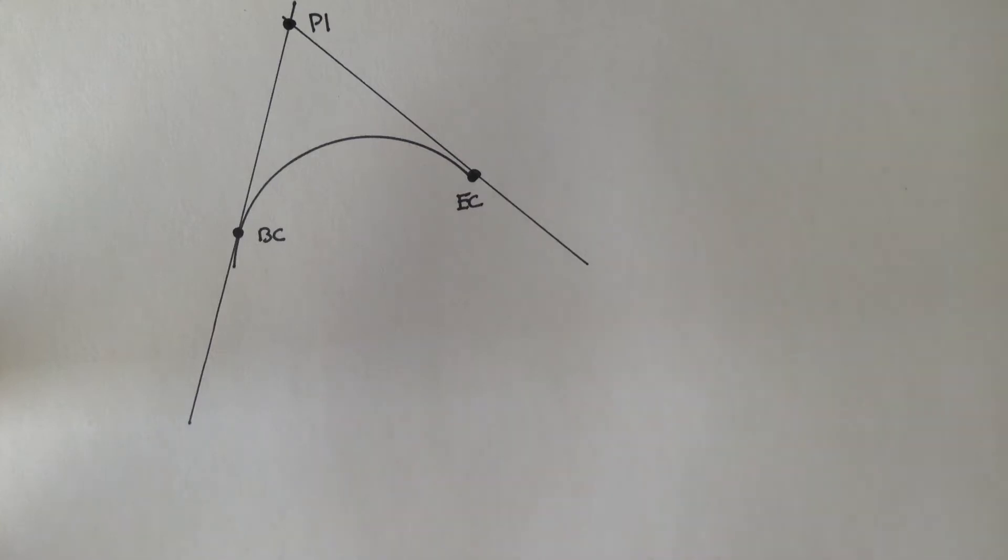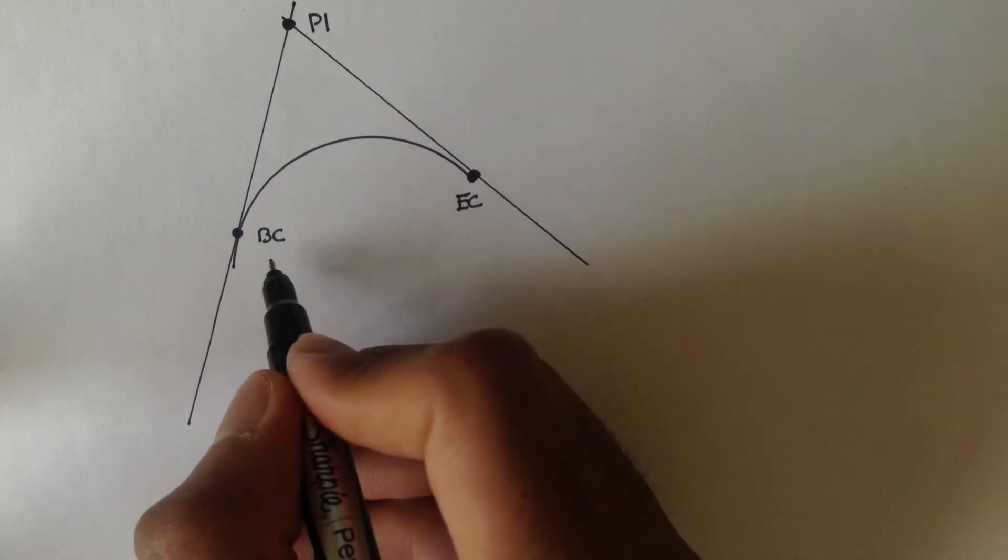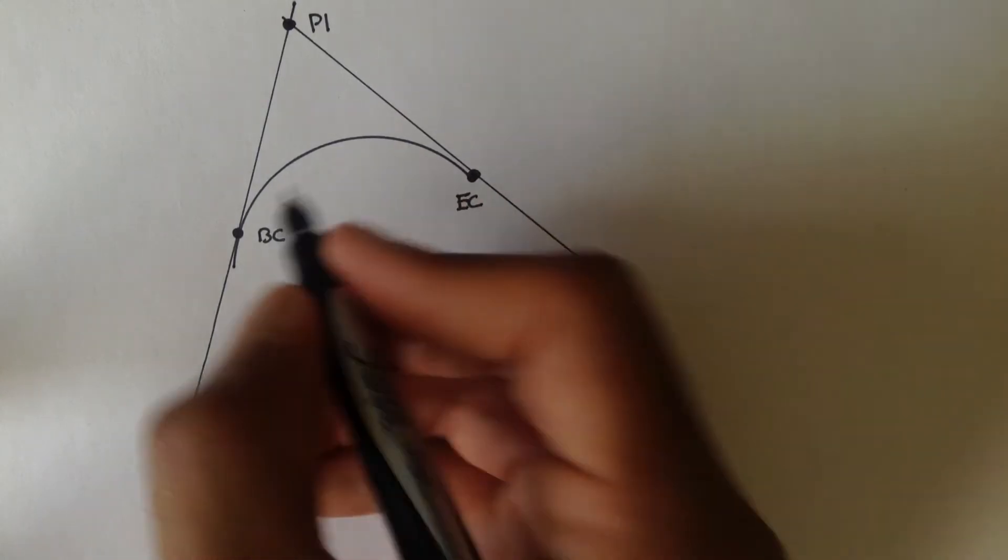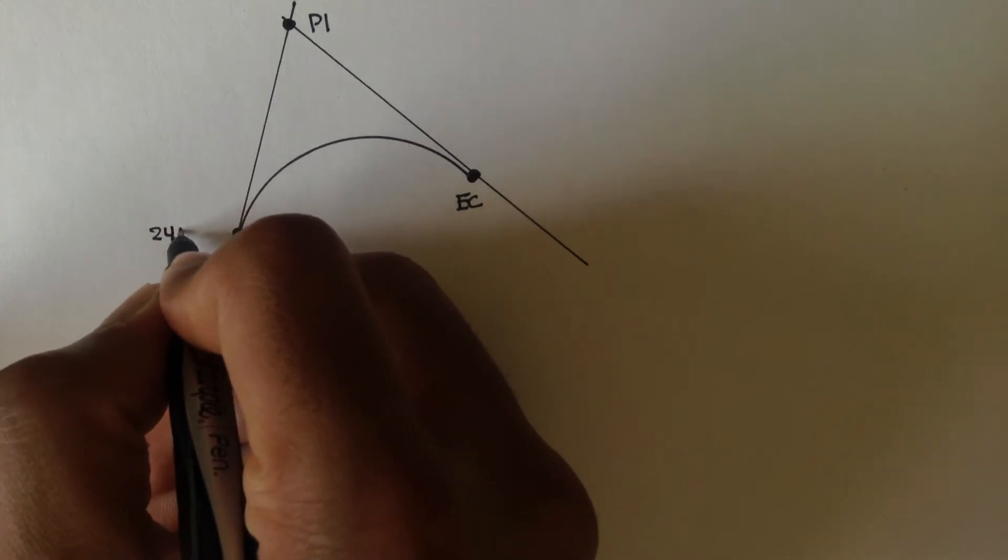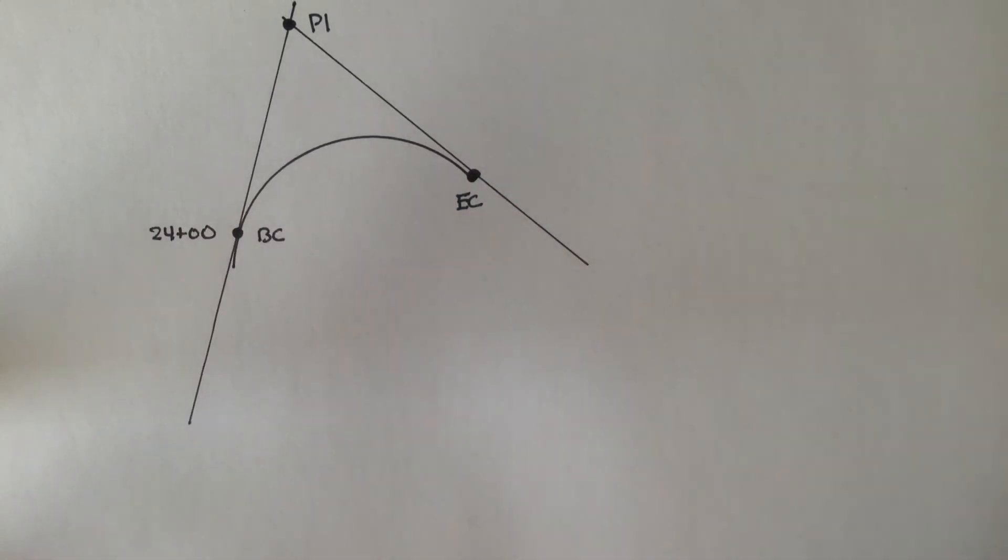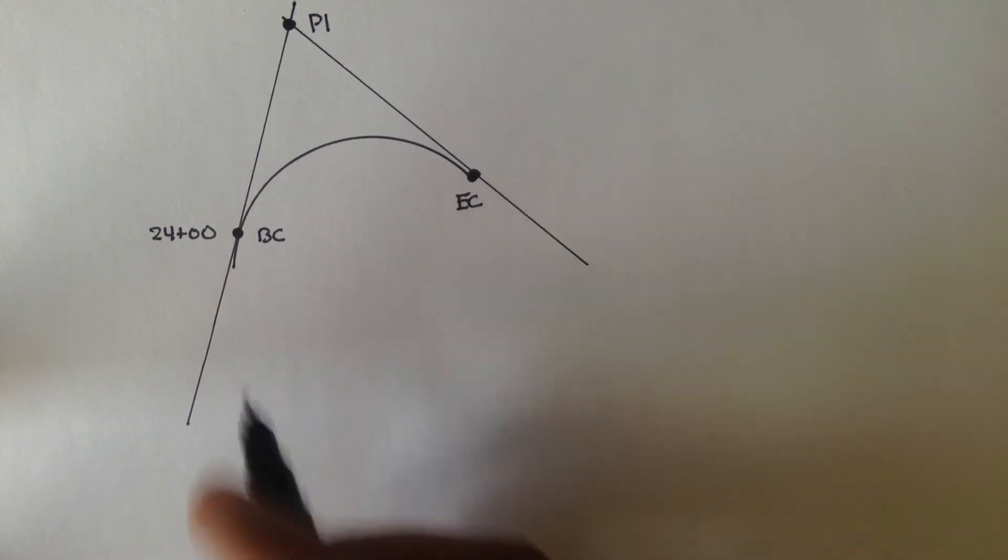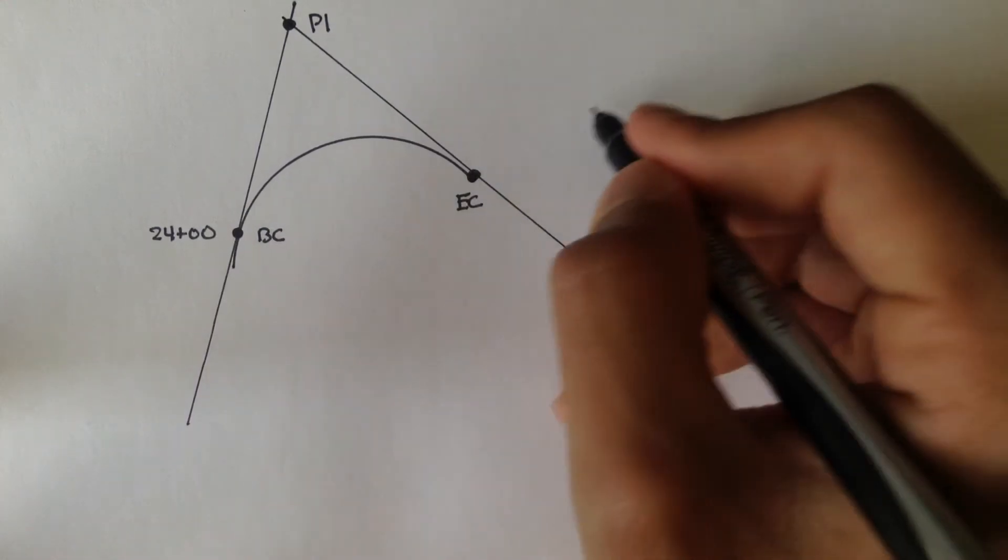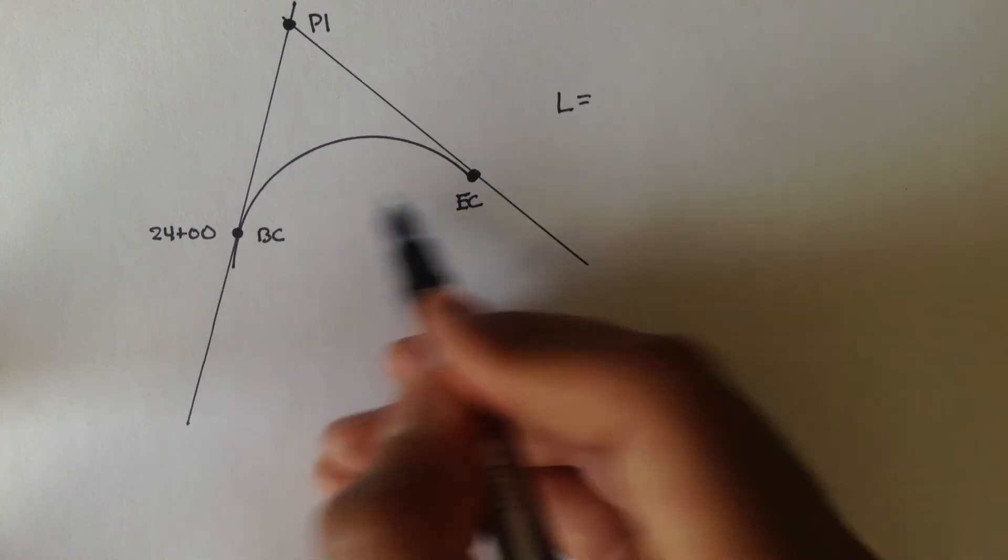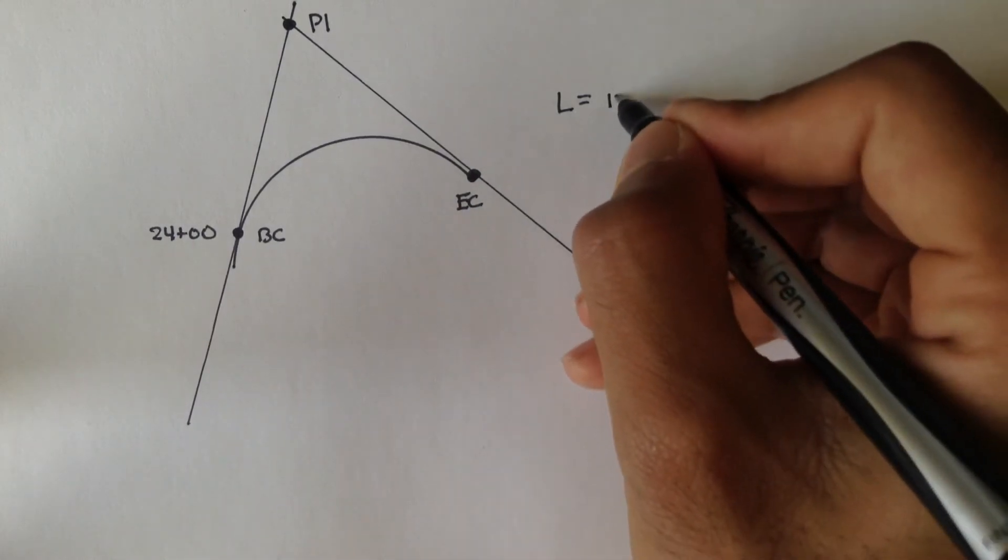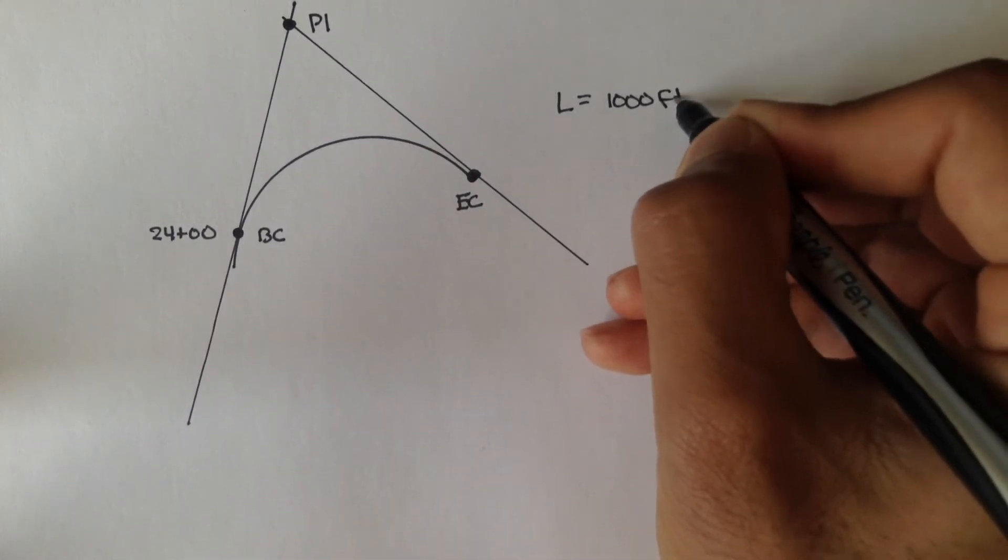So in this example, we have a curve, and the information given is that the beginning of curve, this point right here, is at station 24 plus 0, 0. And they say, I'll put that over here, they say that the length, the length of this curve, the length from BC to EC, is 1,000 feet.